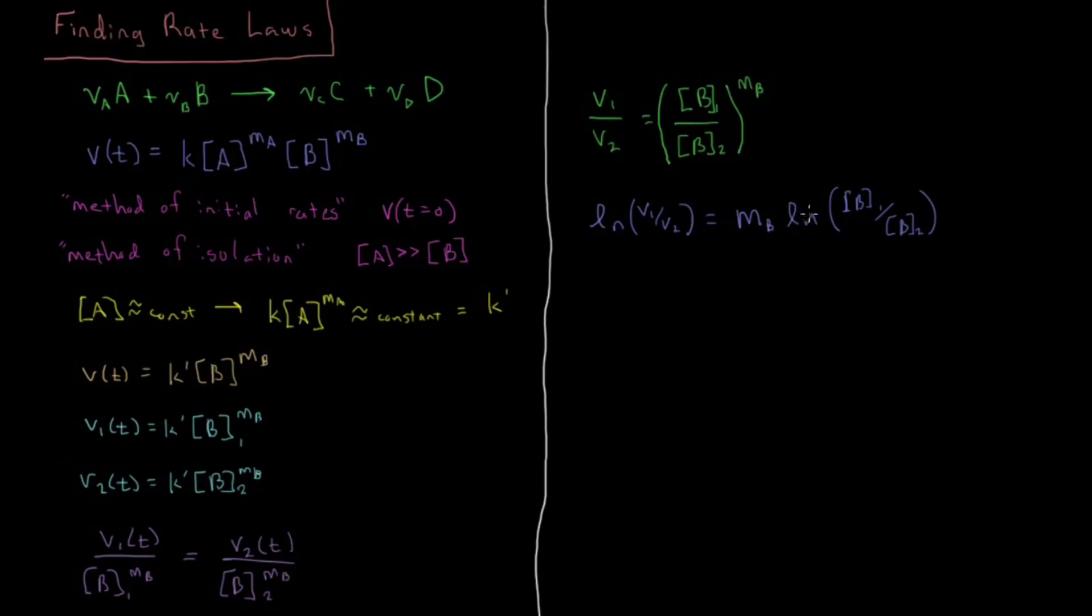Now I just divide both sides by this logarithm and I have isolated MB by itself. So what I have is that the reaction order in B is MB = ln(rate1/rate2) / ln([B1]/[B2]).